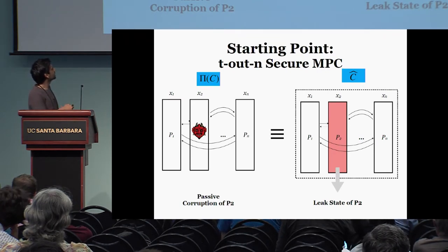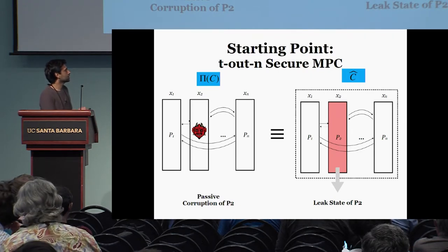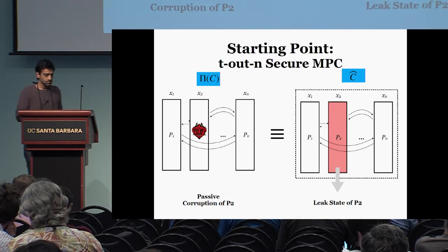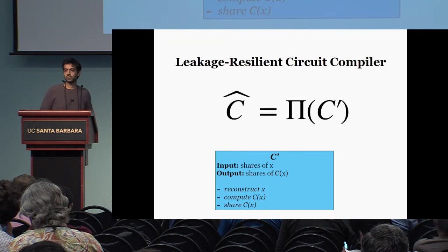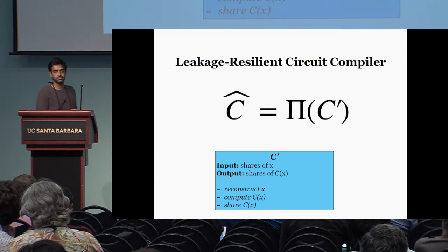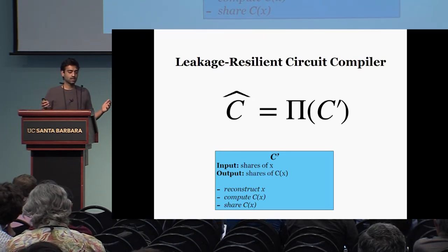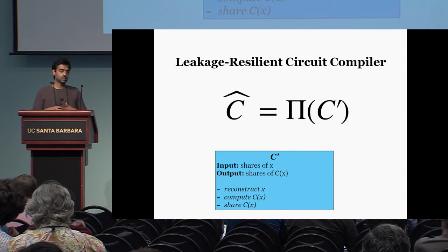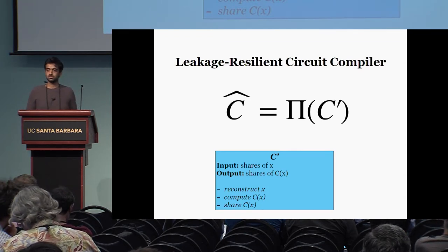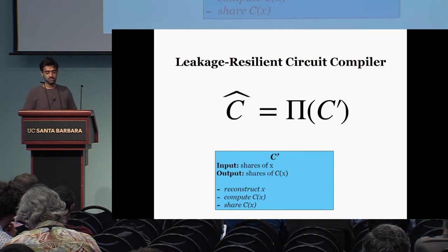A party P_i will be viewed as a block of gates in this compiled circuit, and the communication channels between the parties will be viewed as the wires between these different blocks. Such a different way of viewing MPC allows you to correspondingly define an intuitive security notion. A party being corrupted here corresponds to leaking the entire block. This viewpoint leads us to the first candidate leakage-resilient circuit compiler: the compiled circuit C-hat is just an MPC protocol for C prime, which takes as input shares of X, reconstructs, computes C of X, and then shares C of X.